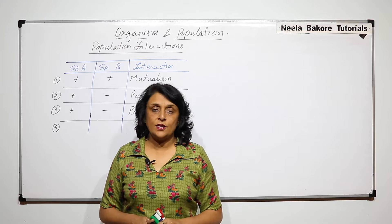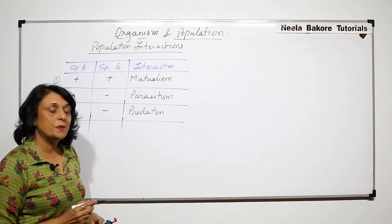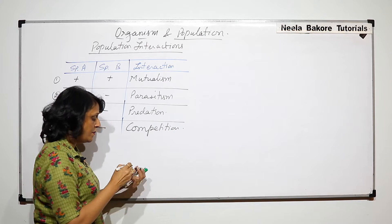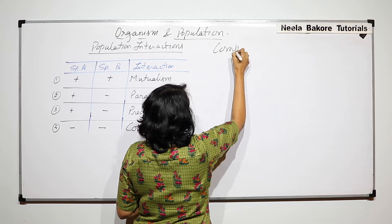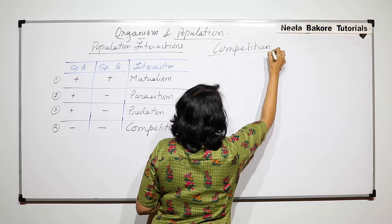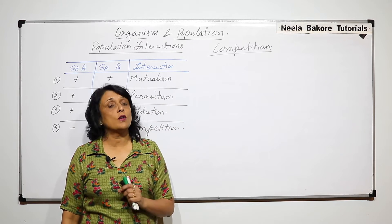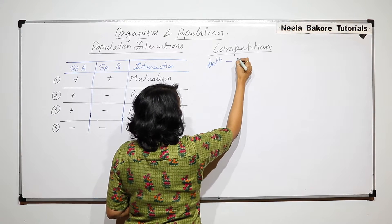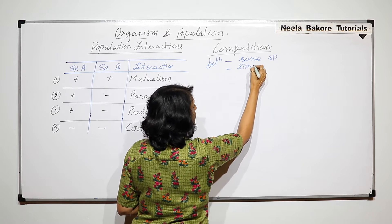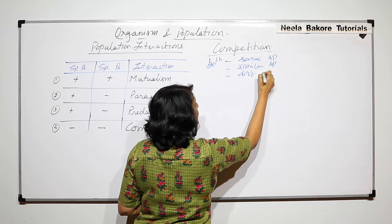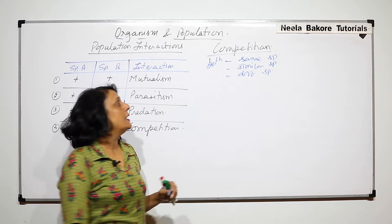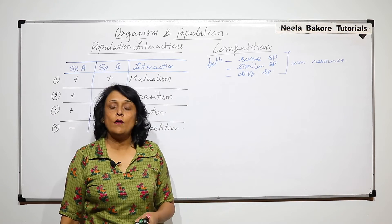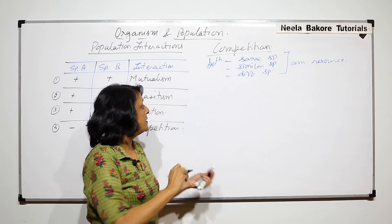In this part, we will take up one more interaction between two species where both species get harmed. This interaction is known as competition. Normally whenever we talk of competition, we assume it is always between members of the same species for a common resource. But competitions can be between members of the same species, similar species, or even different species, and it is normally for a common resource. For all these animals, the common resource is food.